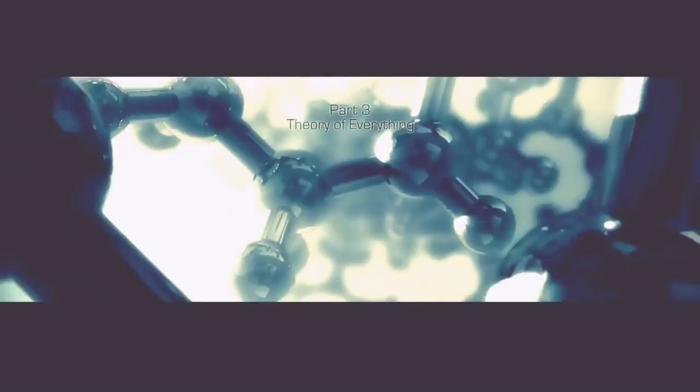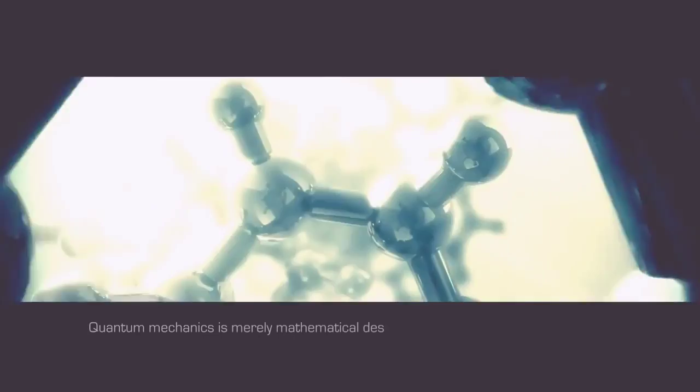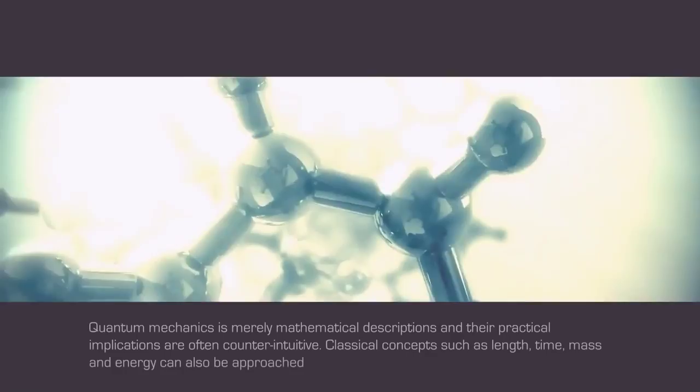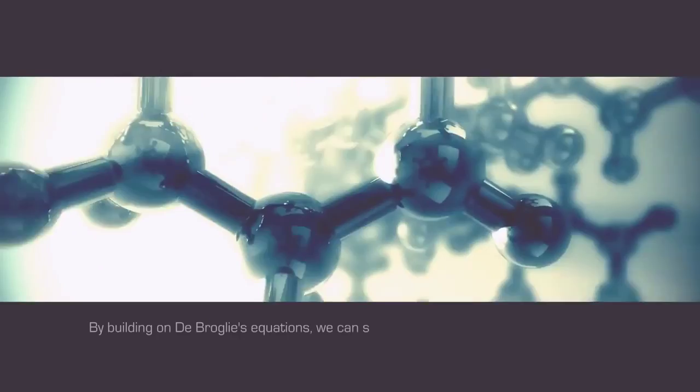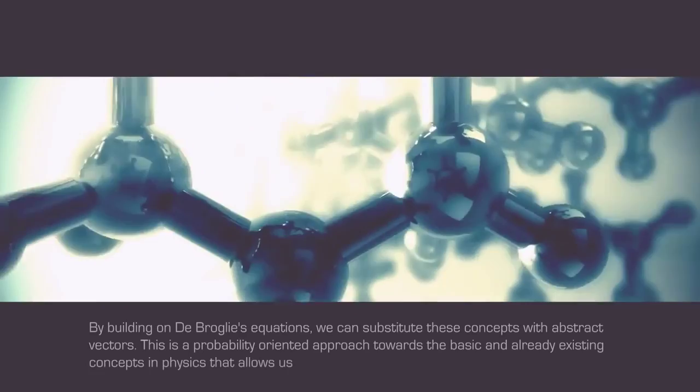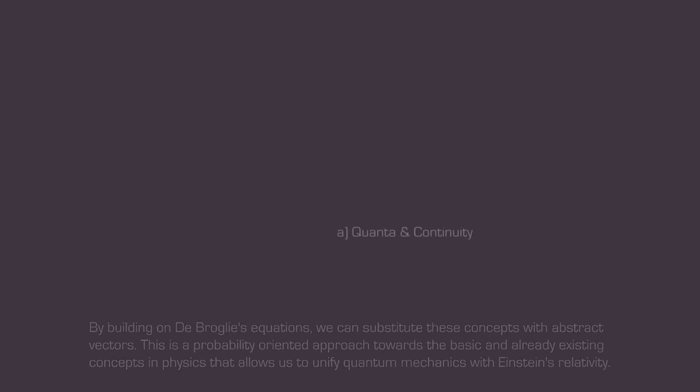Quantum mechanics is merely mathematical descriptions, and their practical implications are often counter-intuitive. Classical concepts such as length, time, mass, and energy can also be approached with similar descriptions. By building on de Broglie's equations, we can substitute these concepts with abstract vectors. This is a probability-oriented approach towards the basic and already existing concepts in physics that allows us to unify quantum mechanics with Einstein's relativity. De Broglie's equations show how all reference frames are quantized, including all matter and all energy.